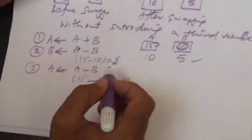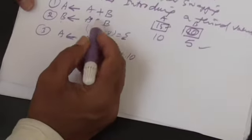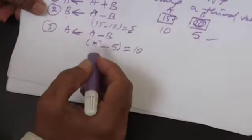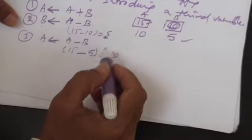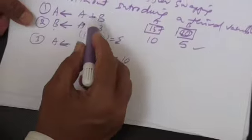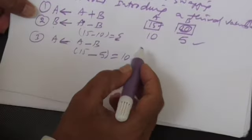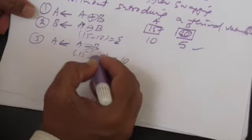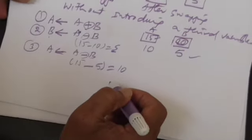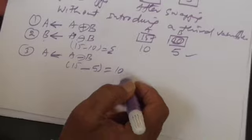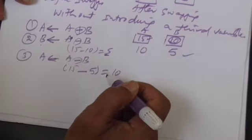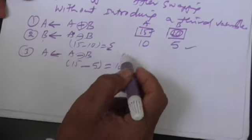That is what is expected out of our operation of swapping. However, it is not that you can only do addition and subtraction. You can also perform swapping without using a third variable using different operations instead of addition and subtraction. I will introduce the other method in my next topic. Thank you.